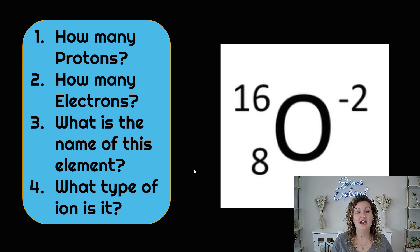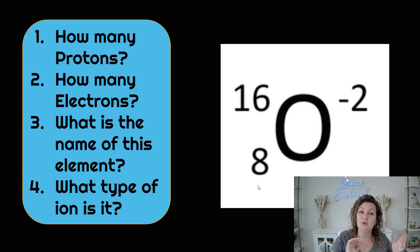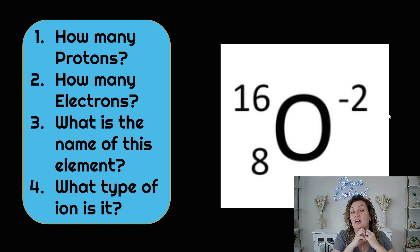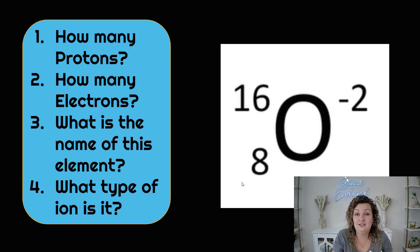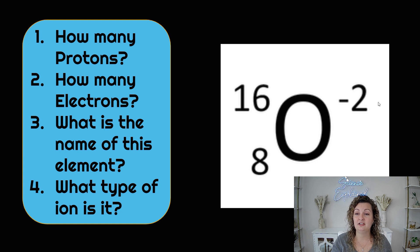Let's try another one. How many protons does this ion have? We look in the bottom left-hand corner — it has eight, which is the atomic number and therefore the number of protons: eight protons. How many electrons? In a neutral atom it would have eight, the same number of protons and electrons, but this is not neutral — this is an ion with a negative two charge. That means it gained two electrons. So if it had eight and gained two, we have 10 electrons. What is the name of this element? If you look on the periodic table, O is oxygen. And what type of ion is this? Because it's negative, it is an anion.